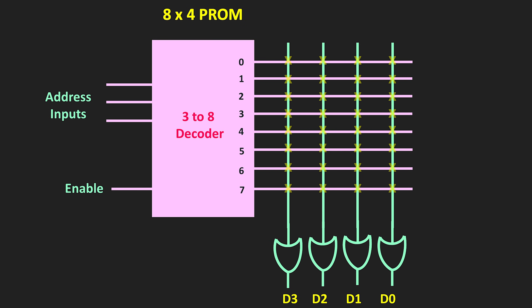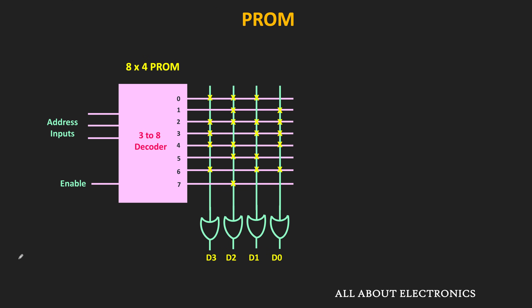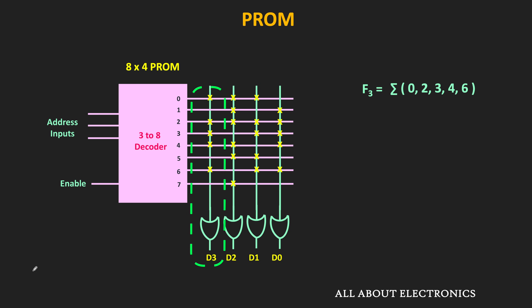But if you see the interconnections between the output of the decoder and the OR gate, then they are programmable. By applying a high voltage to specific pins in the PROM, the programmer can remove some of the interconnections. In this 8x4 PROM, each OR gate has 8 inputs. If you see the first OR gate or this D3 output, then out of 8 possible inputs, only 5 inputs are connected to the OR gate. Each output of the decoder represents a specific min term — the first output represents min term M0, the second represents M1, and so on. The outputs corresponding to min terms M0, M2, M3, M4, and M6 are connected to this first OR gate, so the output of the first OR gate is the summation of all these min terms.